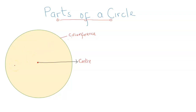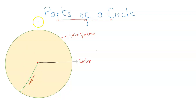Also a very crucial one — the most important one — is the straight line that's drawn from the center of the circle to the circumference. That's called the radius. This line right here is called the radius of the circle.